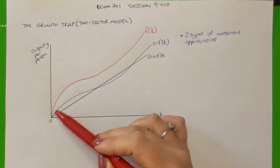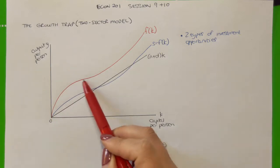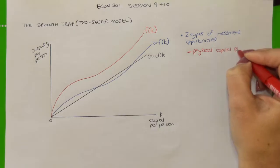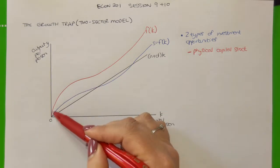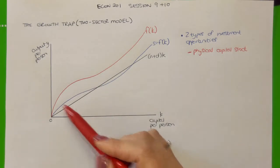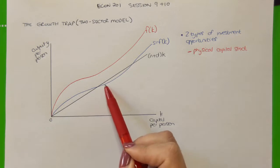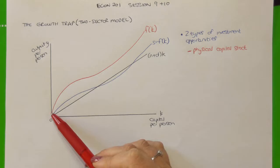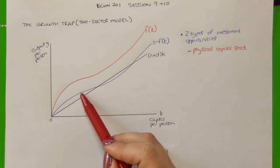Initially, the shape of the production function is as it was with neoclassical growth theory — it is concave. This illustrates that as an economy starts to increase its capital stock per person, output per person increases at a decreasing rate. The initial part of the savings function also has a concave shape, following the production function. As capital per person increases, the economy saves a constant portion of output per person, so savings per person also increases at a decreasing rate.